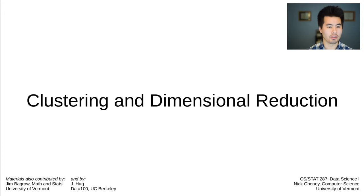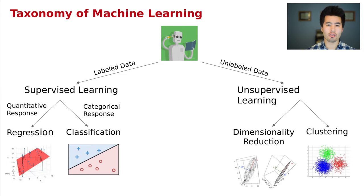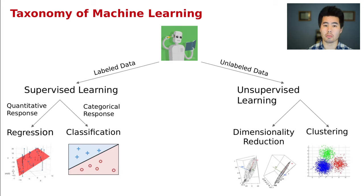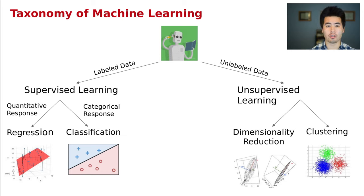Hey folks, welcome back to another Data Science 1 lecture. Today we're going to talk about unsupervised learning, specifically clustering and dimensionality reduction. Just to orient us again, we've been talking about some of the supervised learning methods for the last few lectures — both regression and classification, and linear and nonlinear models — and we're going to broaden out the set of models to also talk about unsupervised learning.